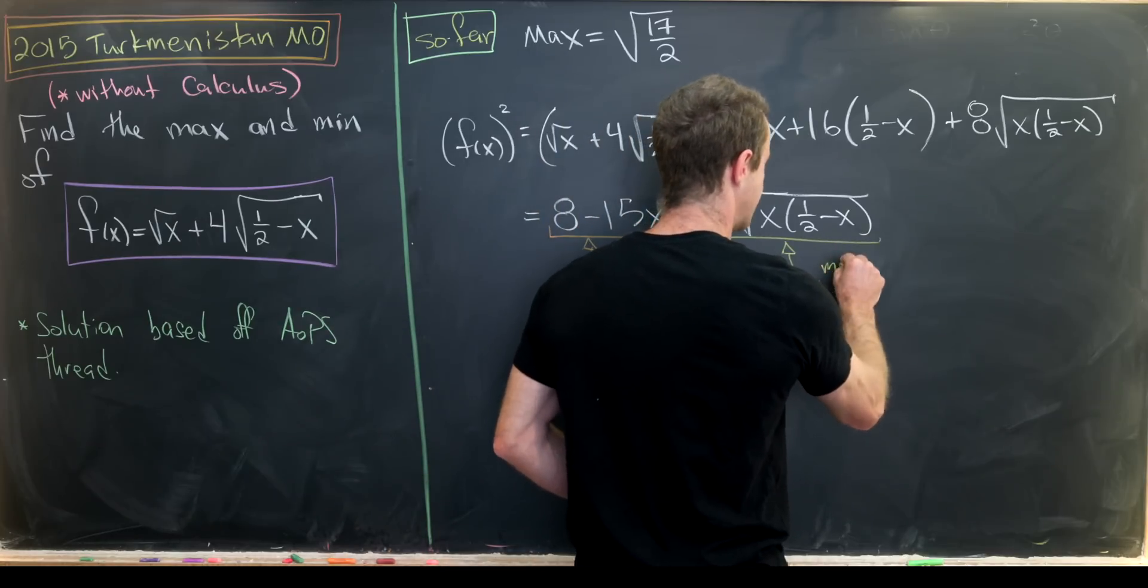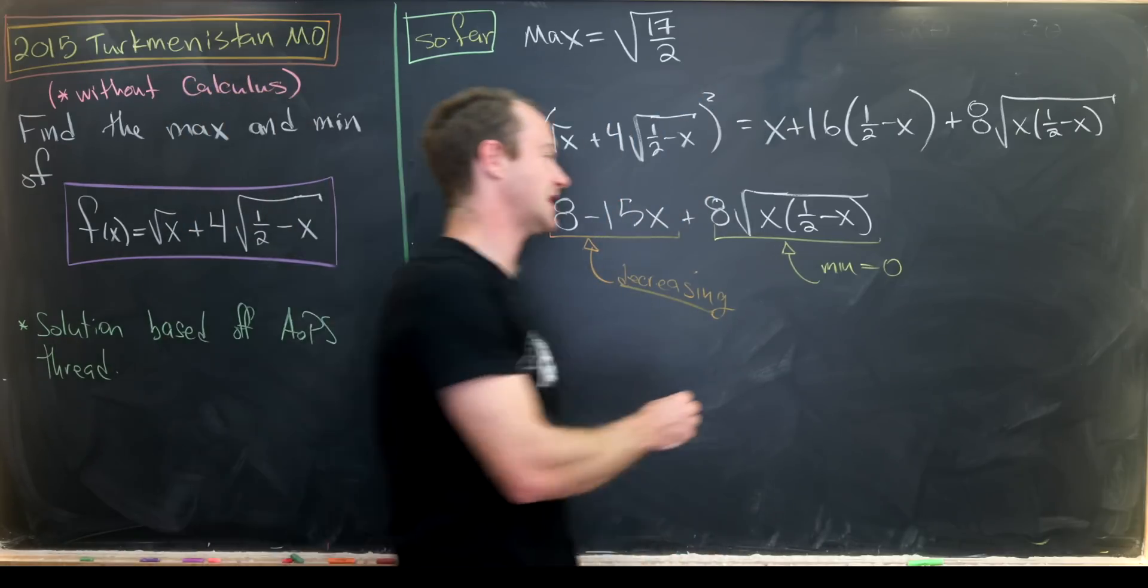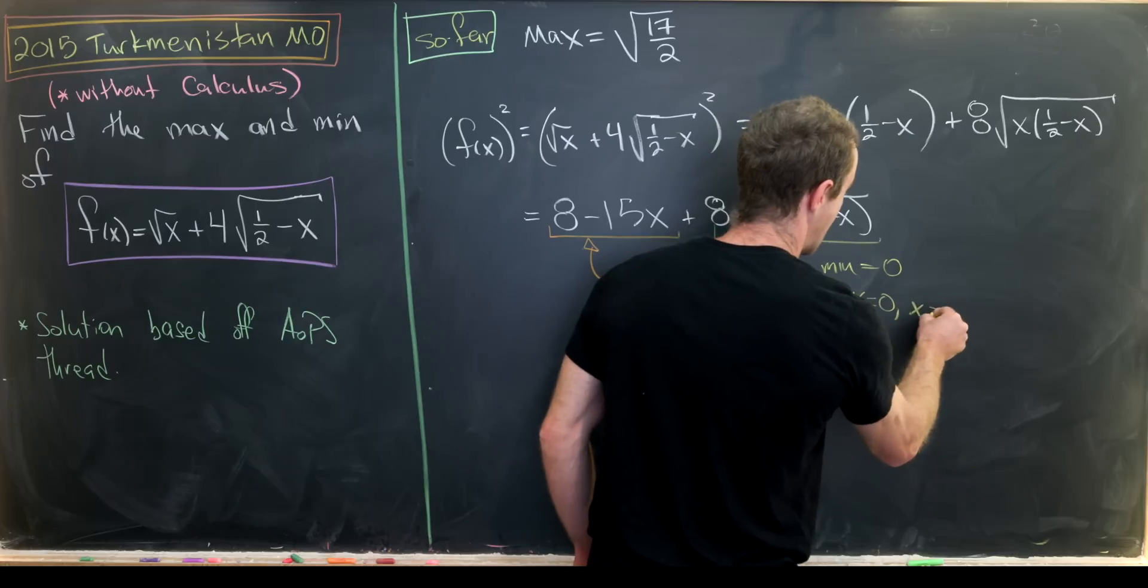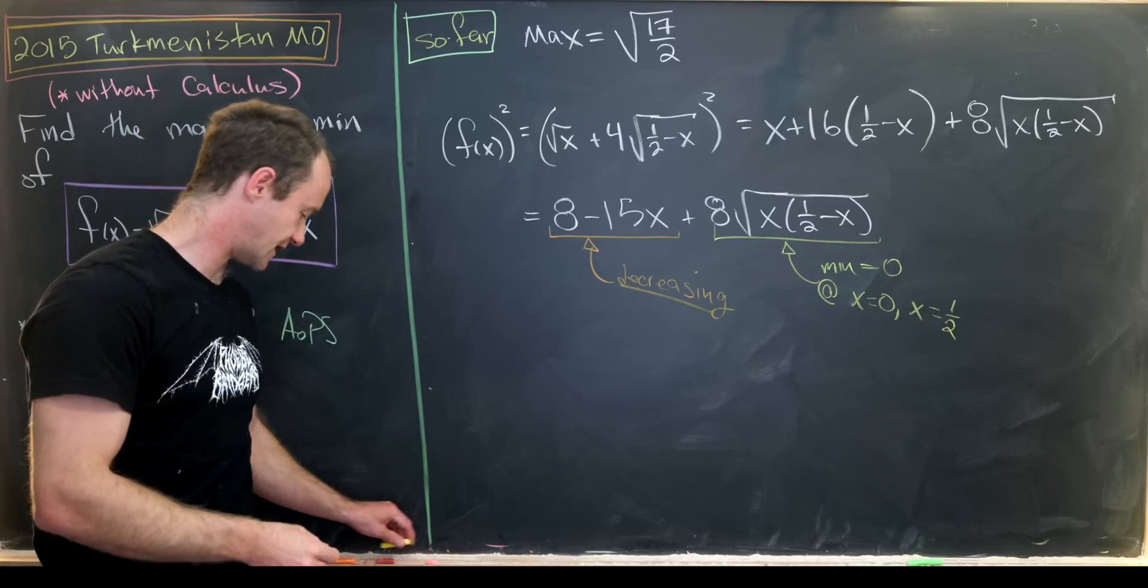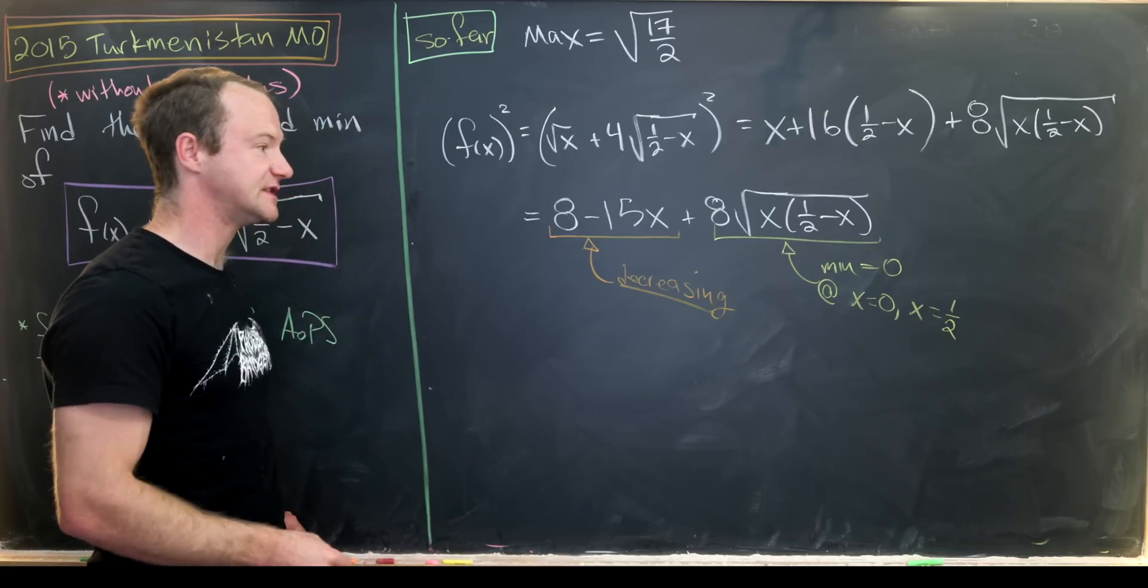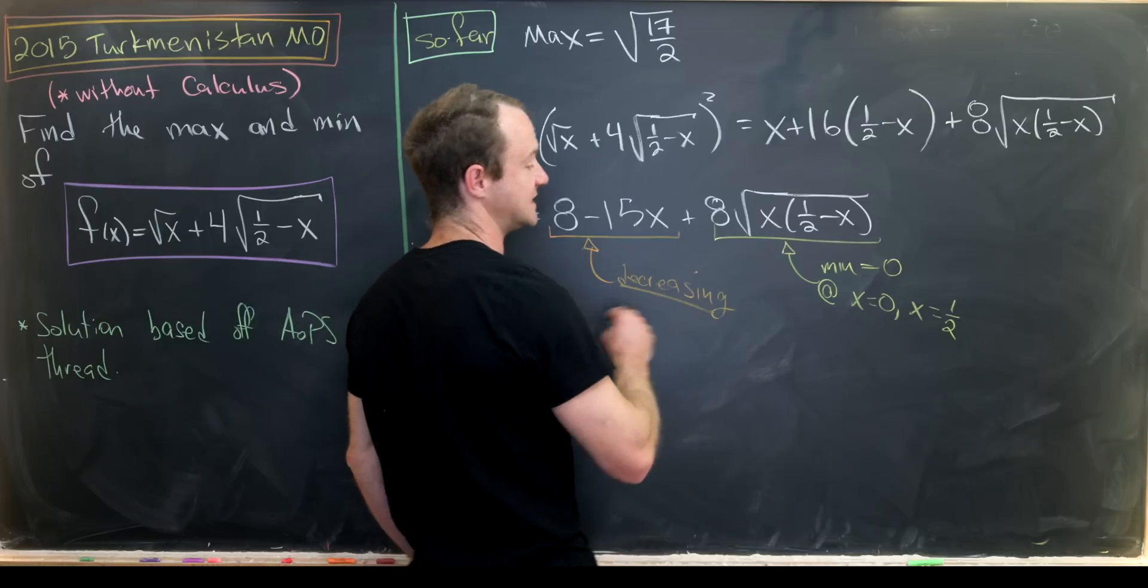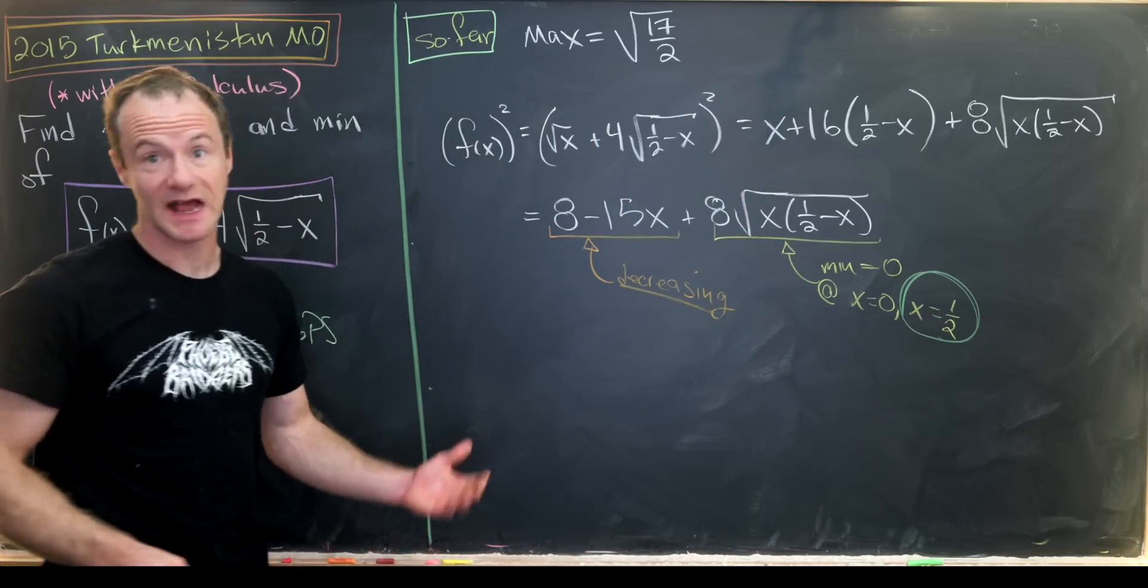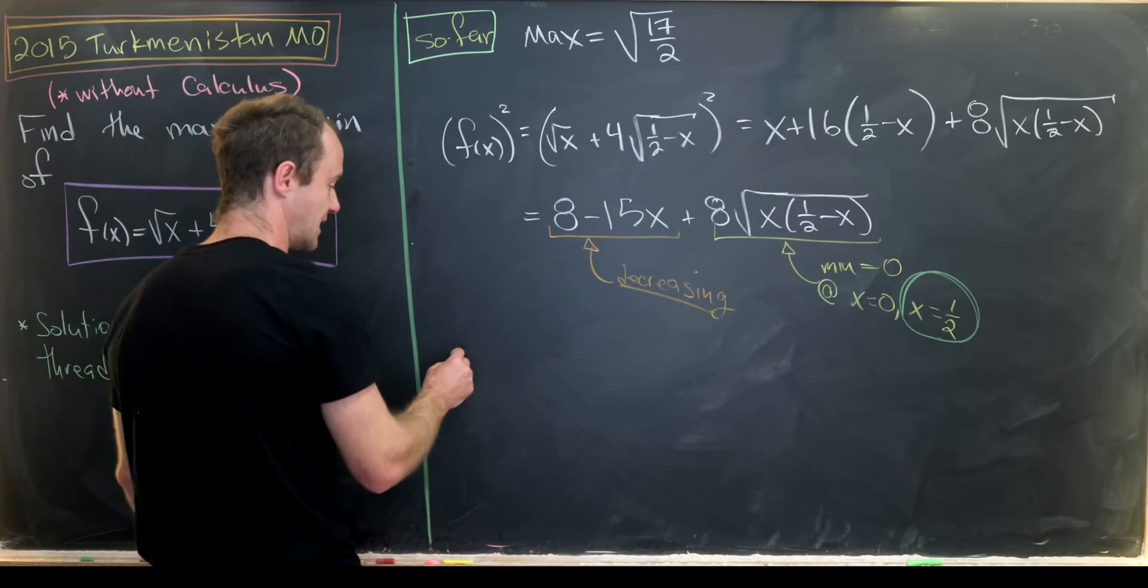And then furthermore, notice that the minimum value of this is equal to zero. That's because it's a square root function. And it occurs at x equals one half and then again at x equals zero. Or x equals zero and then again at x equals one half. And then putting these two facts together, the fact that this is decreasing and the fact that this equals zero at these two places tells us that we should choose the x equals one half value in order to achieve our minimum.